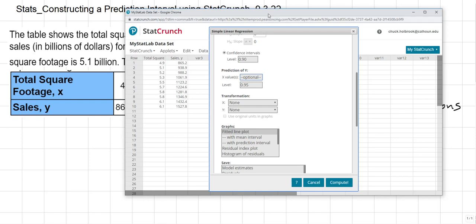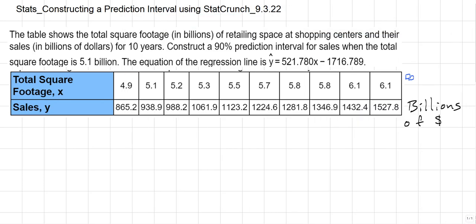And what we're going to do is we're going to predict what our Y value will be based upon our initial X value, which, in this particular case, is going to be 5.1 billion.